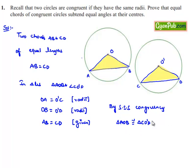When two triangles are congruent, then their corresponding angles are equal. Therefore, angle AOB is equal to angle CO'D. Therefore, equal chords of congruent circles subtend equal angles at their centers, proved.